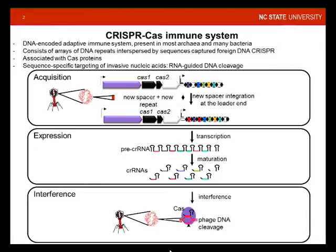The DNA repeats themselves are typically composed of 30 to 35 nucleotides, and the spacers likewise are relatively short, also typically 30 to 33 base pairs. The CRISPR-Cas adaptive immune system is composed of three general steps for the mechanism of action.